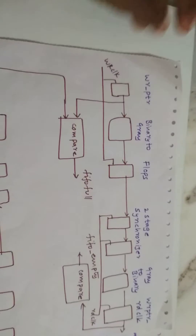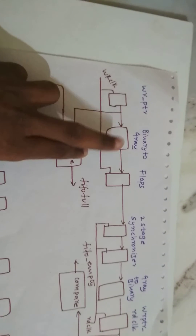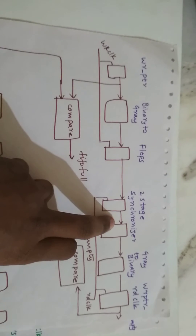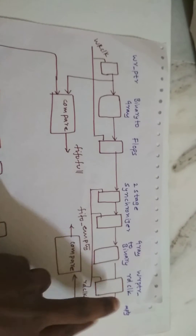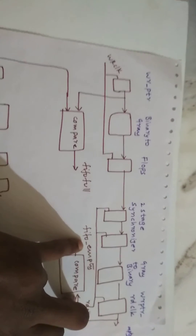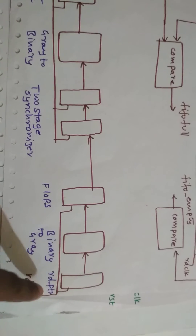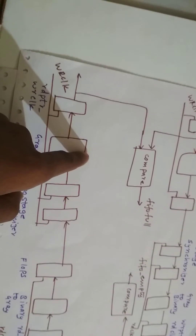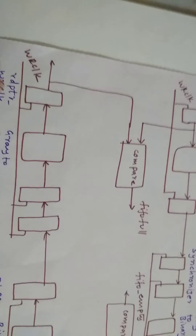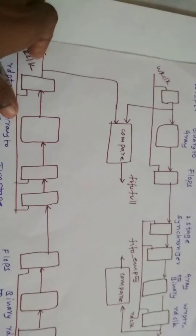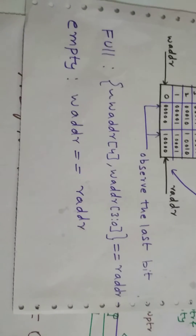So, this is what exactly is happening. In the write full condition, we send the read pointer in the read clock domain, convert it from binary to Grey and store it in the two-flop synchronizers, then convert back from Grey to binary and compare it with the read pointer in the write clock domain. If these conditions match, the FIFO full and empty conditions are generated.